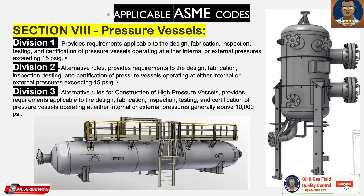Section 8 is for Pressure Vessels — extensively used for power plants. Division 1 provides requirements applicable to the design, fabrication, inspection, testing, and certification of pressure vessels operating at either internal or external pressures exceeding 15 psi. Division 2 provides alternative rules with requirements for pressure vessels also operating above 15 psi. Division 3 provides alternative rules for construction of high pressure vessels, with requirements applicable to pressure vessels operating at internal or external pressures generally above 10,000 psi.